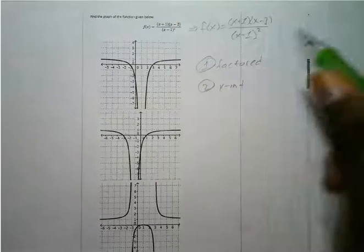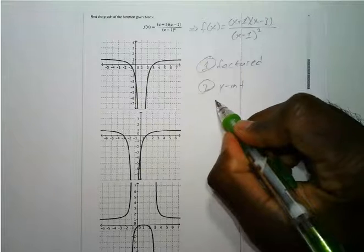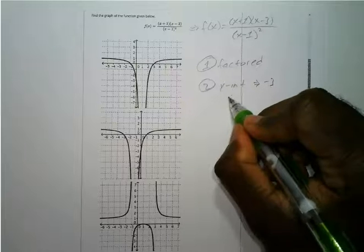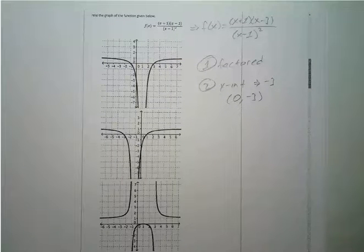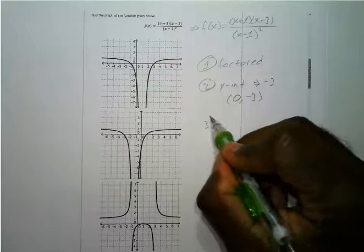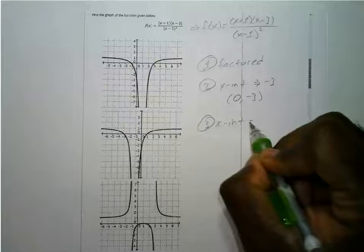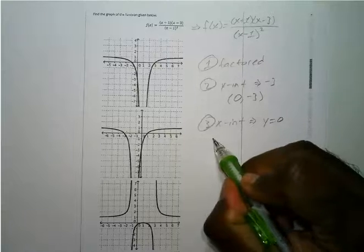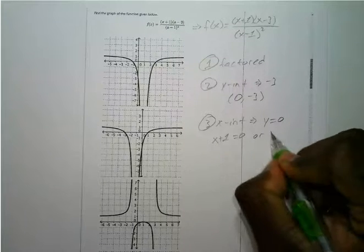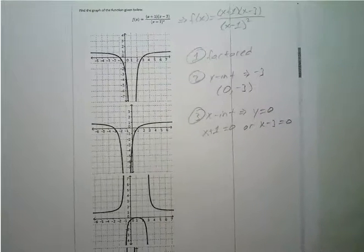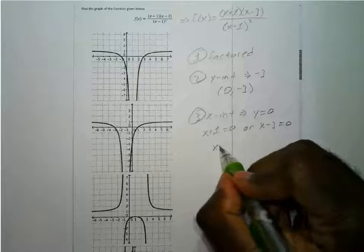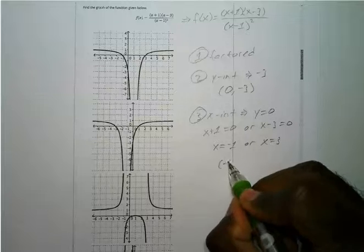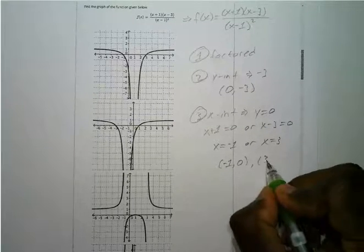For the y-intercept, let x equal 0 and you get negative 3, so the y-intercept is at 0, negative 3. For the x-intercept, set f of x equal to 0: x plus 1 equals 0 gives x equals negative 1, and x minus 3 equals 0 gives x equals 3. So the x-intercepts are at negative 1, 0 and 3, 0.